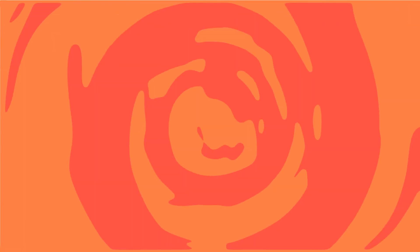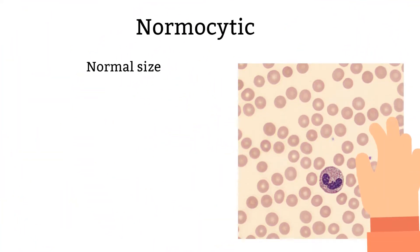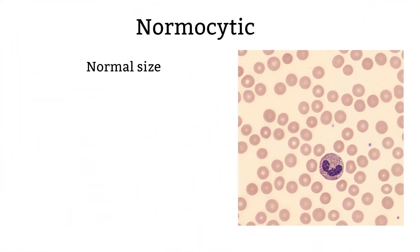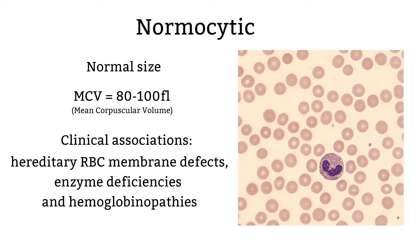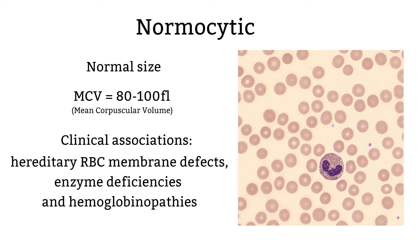Let's discuss normocytic. Normocytic is a term used to describe normal-sized red blood cells. When we describe a patient as having normocytic red blood cell morphology, the MCV should be in the normal range as well. A normal-sized red blood cell has an MCV of 80 to 100. There are some illnesses that associate with normal-sized red blood cells.